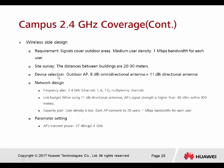For the outdoor AP application example — a digital campus — the device selection uses only outdoor AP. The options are 8 dBi omnidirectional and 11 dBi directional antennas. The frequency band used is 2.4 GHz. With the 11 dBi directional antenna, the AP signal strength is higher than −65 dBm within 300 meters. The transmit power parameter is set at 27 dBm at 2.4 GHz.